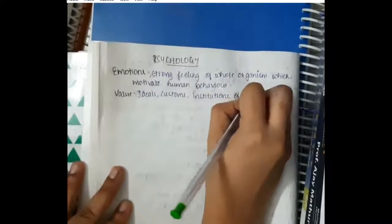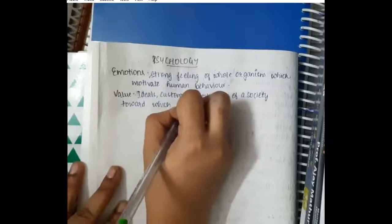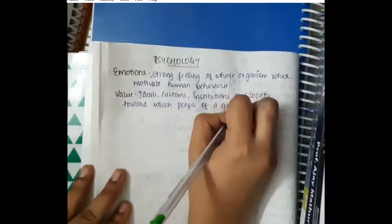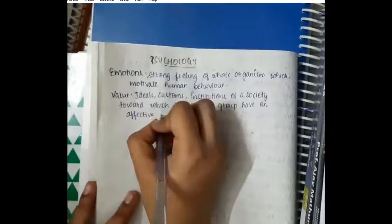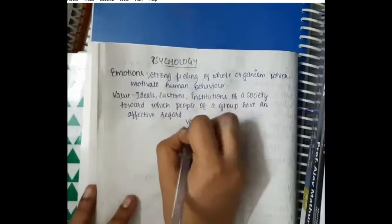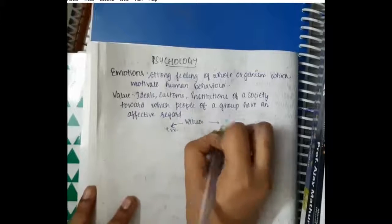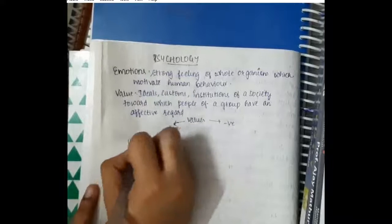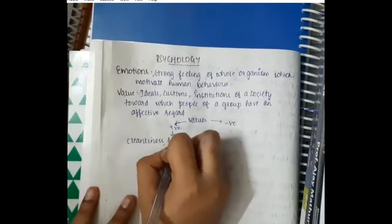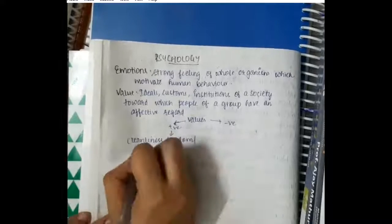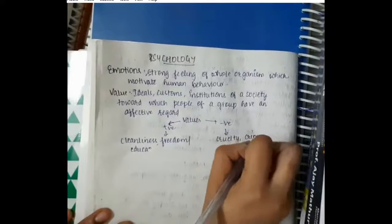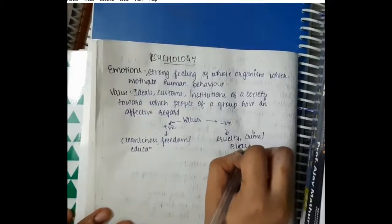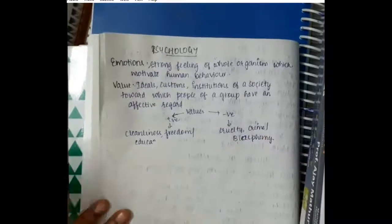Values are things which have meaning for us. We have positive values and negative values. Positive values include cleanliness, freedom, and education. Negative values include cruelty, crime, and blasphemy.